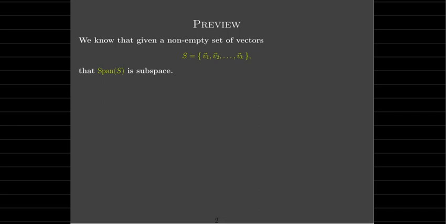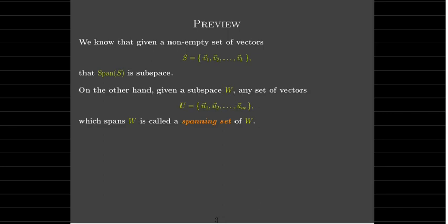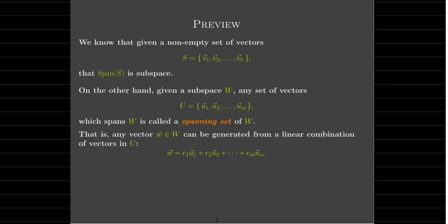Let's do a little bit of review and preview. If we have a non-empty set of vectors, then we saw that the span of that set of vectors forms a subspace. And if we have a subspace W and we pick a set of vectors from W which spans W, we call it a spanning set. A spanning set means that any vector in W can be generated using a linear combination of the vectors in the spanning set — in our set U. The spanning set for a subspace can be used to generate all the vectors in the subspace.